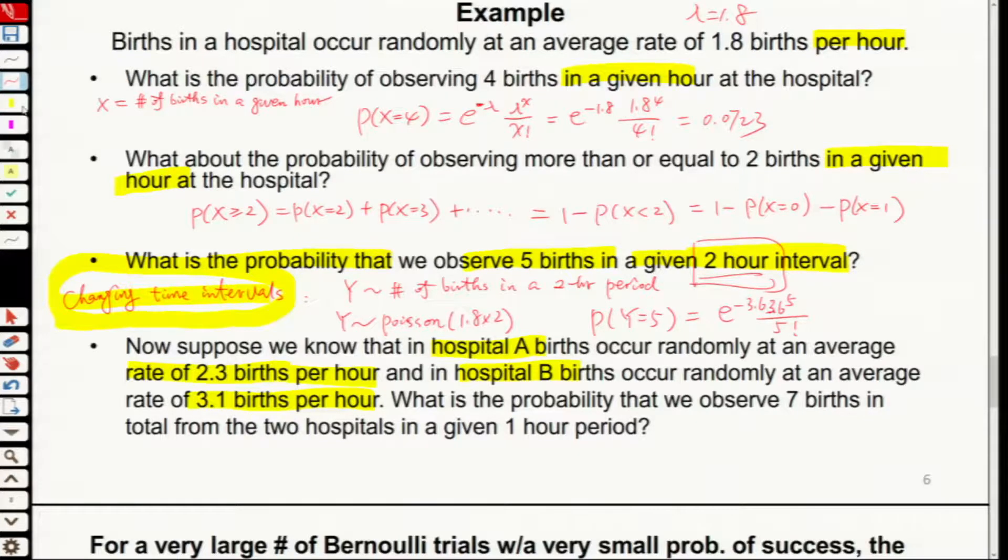What rate do we use? This question is trying to remind you of what we discussed before, the sum of two Poisson variables. If you sum them together, what's going to happen? Still Poisson distribution.